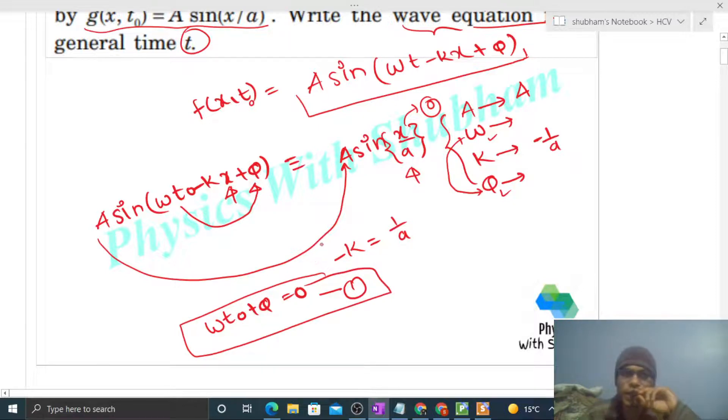The second equation comes from the given speed v. Speed is nothing but ω/k. You see, k value we know, so omega is nothing but v times k. And k is minus 1/a, so putting k equals minus 1/a, we get omega equals minus v/a.